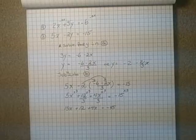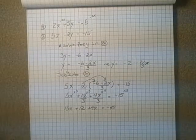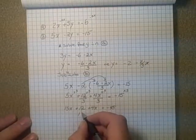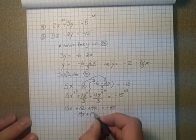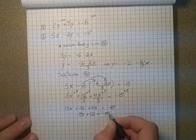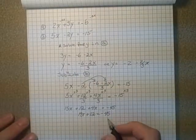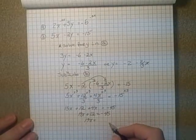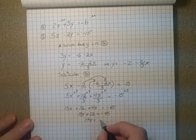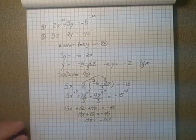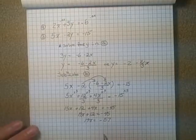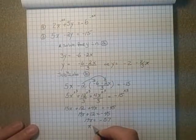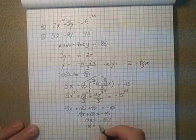Okay, so we have now an expression that we can solve without any fractions to worry about. So I'm going to have 19x, when I add the x's, plus 12 is equal to negative 45. So we'll subtract 12 from both sides. So 19x is equal to 45 subtract 12. That would be negative 57. So divide by 19, and x is equal to negative 3.